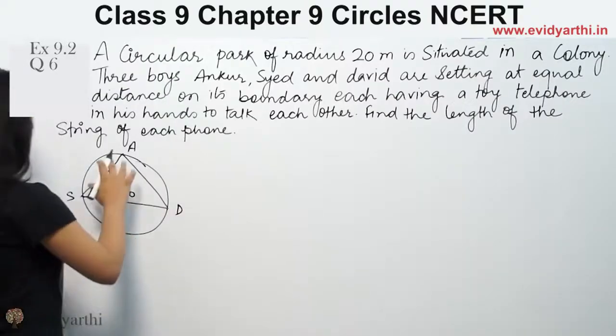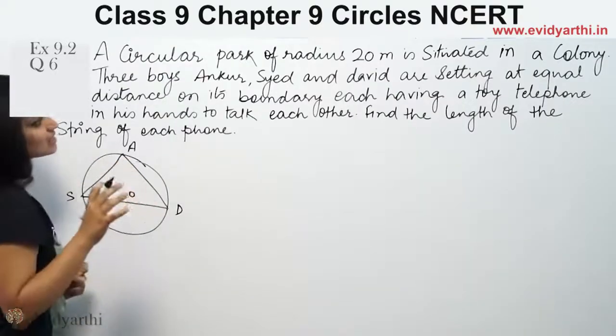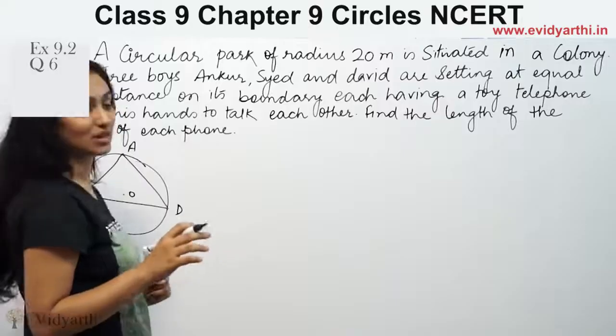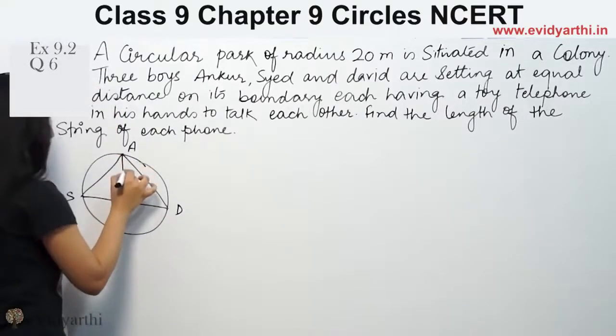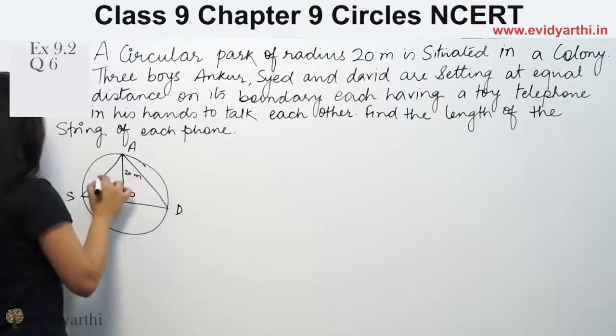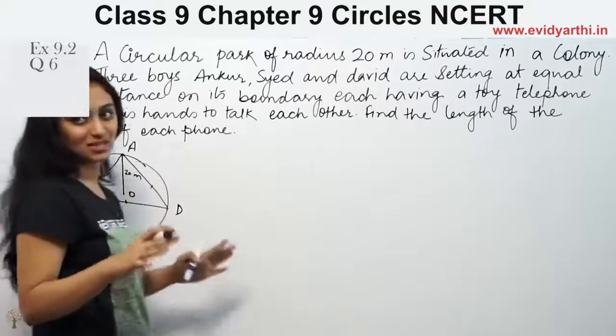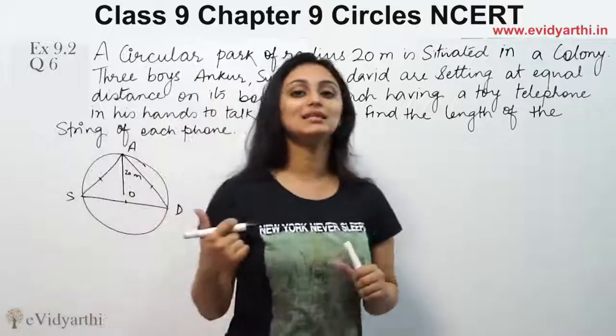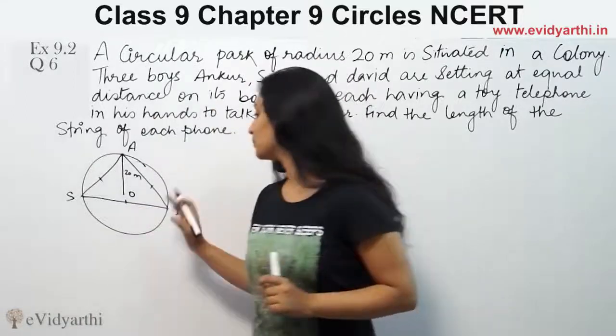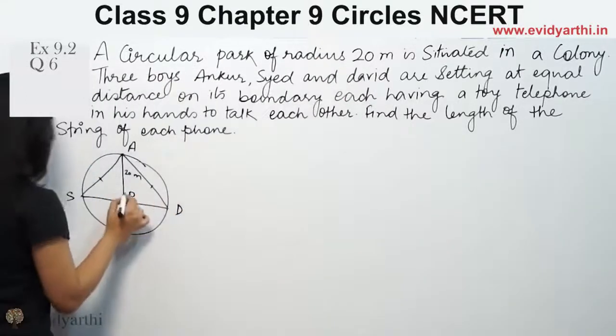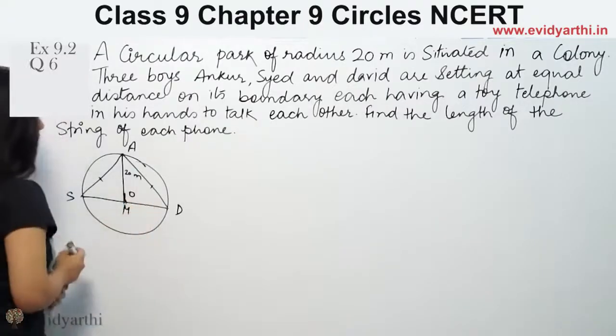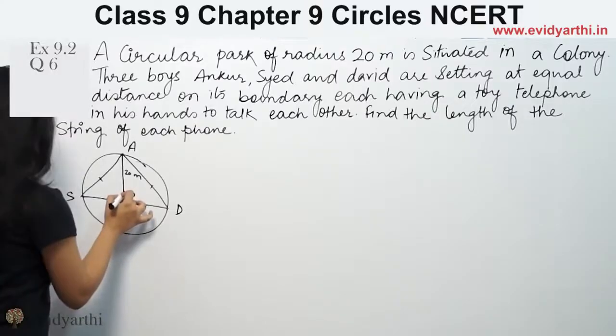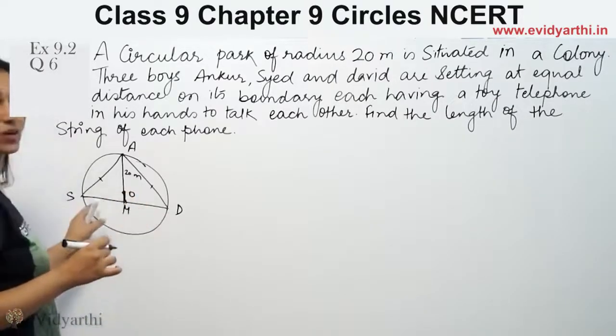So now we have three distances. We are given that the radius is 20 meters. That means O to A, this is 20. And all three lengths are equal. That means the triangle formed here is an equilateral triangle. Let me mark - this is A, this is S, this is D. So this is the center O, and this triangle ASD is equilateral.